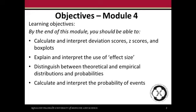For this module, a summary of the learning objectives are that you should be able to calculate and interpret deviation scores, z-scores, and box plots, explain and interpret the use of effect size, distinguish between theoretical and empirical distributions and probabilities, and calculate and interpret the probability of events. In this mini-lecture, I'm going to focus on calculating and interpreting z-scores and using those to calculate the probability of events.